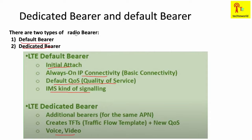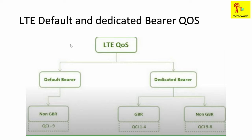In terms of QoS, we can also classify the default and dedicated bearers. For the default bearer, there is a non-GBR type, and the QCI is nine. For the dedicated bearer, there are two types: GBR (guaranteed bit rate) and non-GBR (non-guaranteed bit rate). For GBR, the QCI range is QCI 1 to 4, and for non-GBR dedicated bearer, it is QCI 5 to 8.